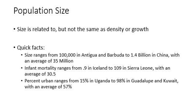Some quick facts about population: the range in size from country to country is quite impressive. The smallest country is Antigua, coming in at 100,000. The largest is China at 1.4 billion, although it's expected to be passed by India in the near future. Related statistics include infant mortality, which ranges from a low of 0.9 in Iceland all the way up to 109 per 1,000 in Sierra Leone. The world average is 30.5 per 1,000.